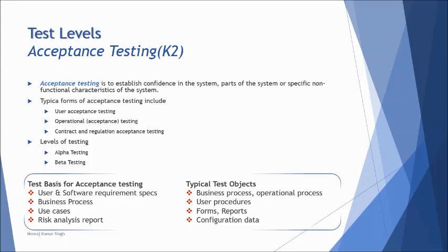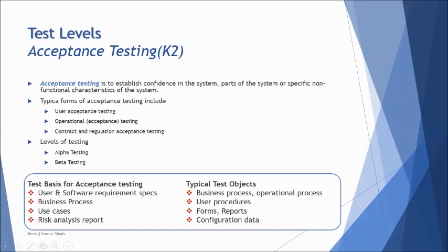At the end, we have the test basis and typical test objects for acceptance testing. For each level, you also need to create relationships between them. For example, use cases are a common test basis for integration, system, and acceptance testing, whereas risk analysis reports are a common basis for system and acceptance testing. This tip will help you answer certain questions commonly asked in this section.